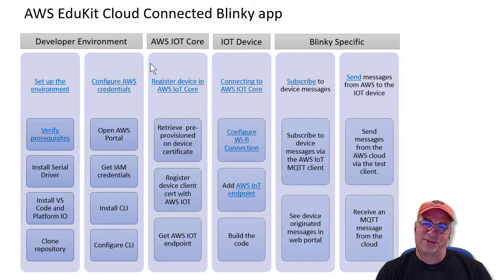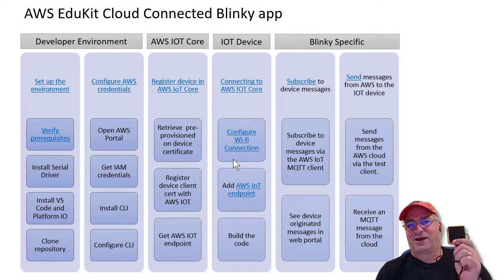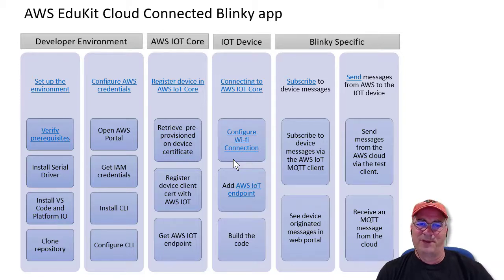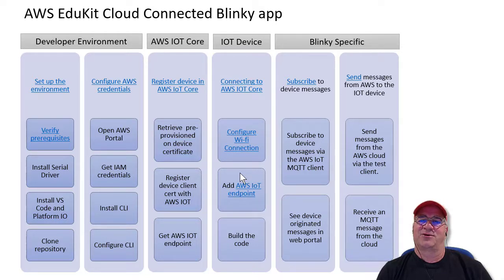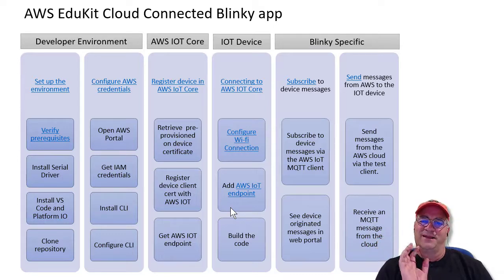Then on the device itself — so we did all that in AWS — the next thing we're going to do is actually configure the device. So we configured our developer station, then we configured AWS IoT, and then we have to configure the device. One of these things is really on a Wi-Fi connection. We're going to configure basically the build in the dev environment so that we can configure the Wi-Fi connection, and we're going to build into the device the AWS IoT endpoint. So this thing is going to be coded to the AWS environment. Then we'd build the code and download the firmware.